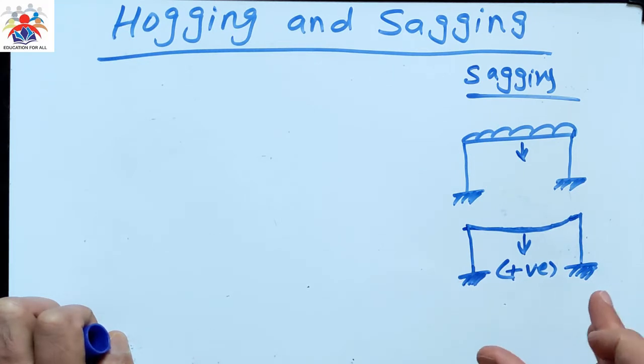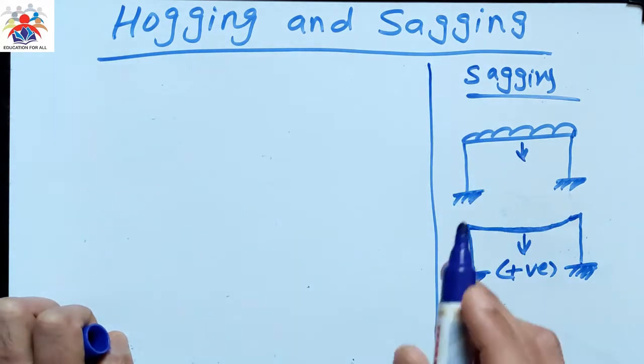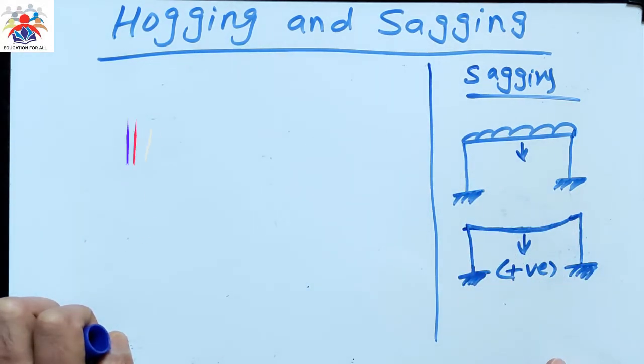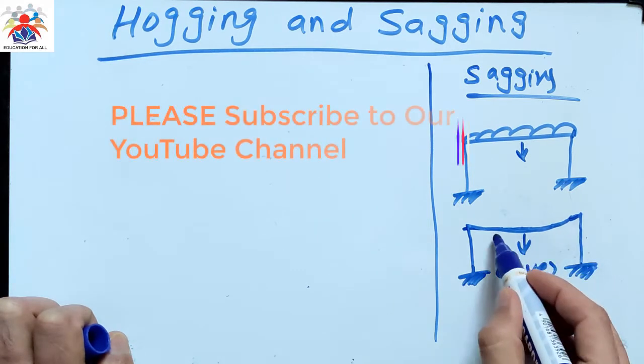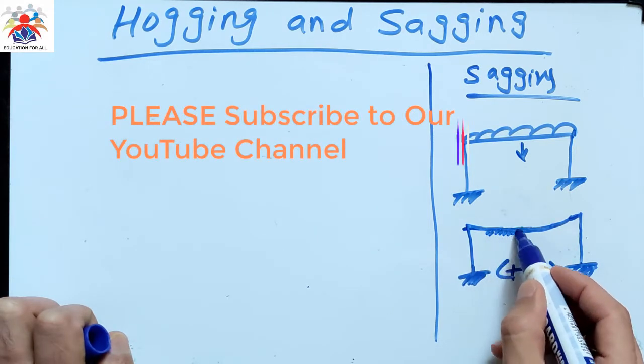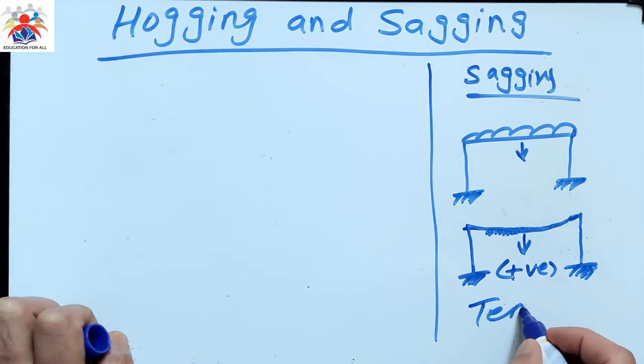In sagging, what happens is tension occurs in the bottom of fibers. So this is basically our beam fibers. Here we have tension at the bottom, tension at the bottom of fiber.